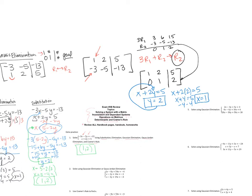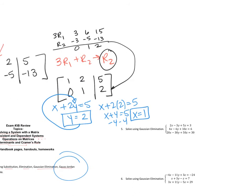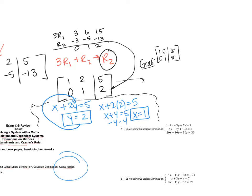The next method is Gauss-Jordan elimination — going a little further. Instead of stopping at row echelon form, we want reduced row echelon form. Continuing from where we were, the matrix is 1, 2, 5 and 0, 1, 2. My goal is to make the 2 in row 1 become a 0.